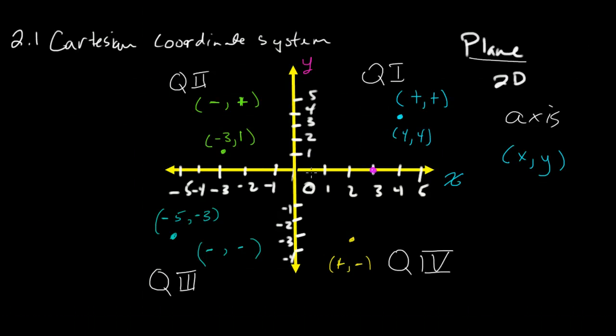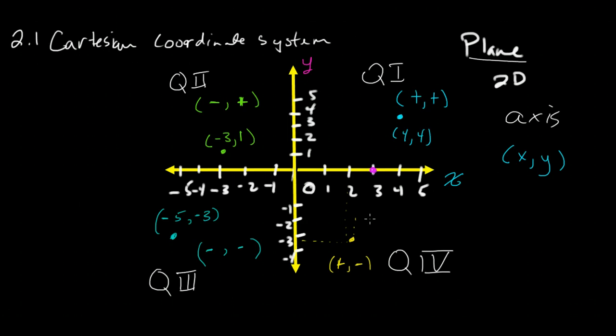And for sure, if I go in this direction from the origin, 1, 2, and then down, 1, 2, 3, then my point is at 2, negative 3, and you're right. My x is positive, and my y is negative.